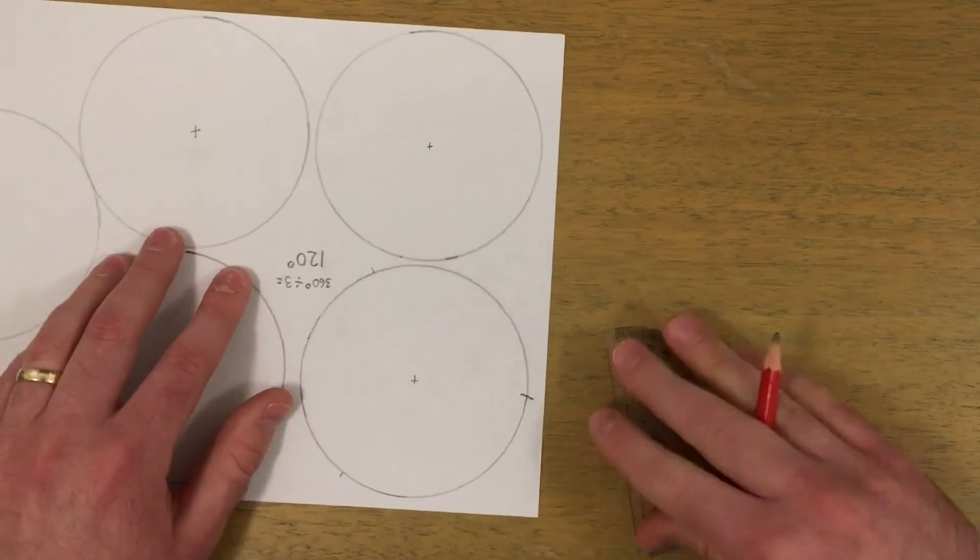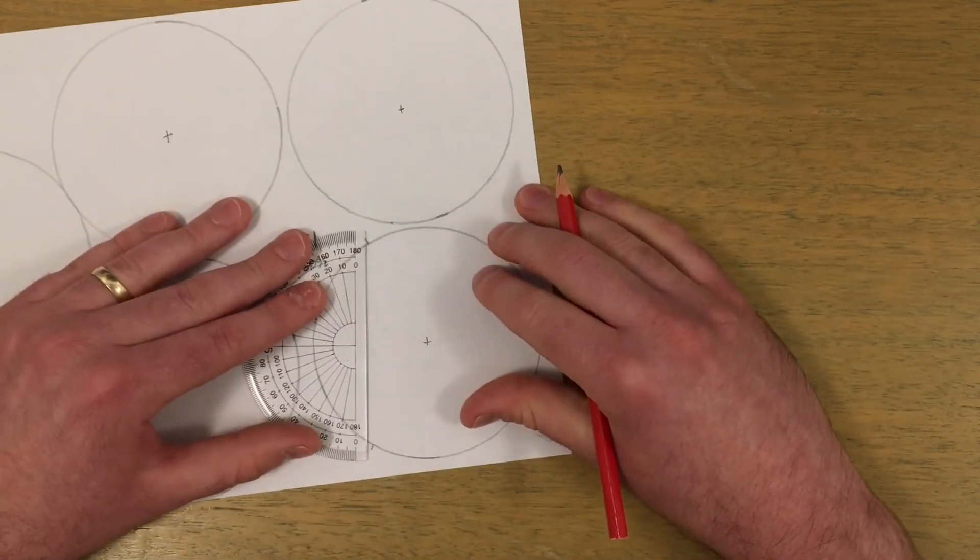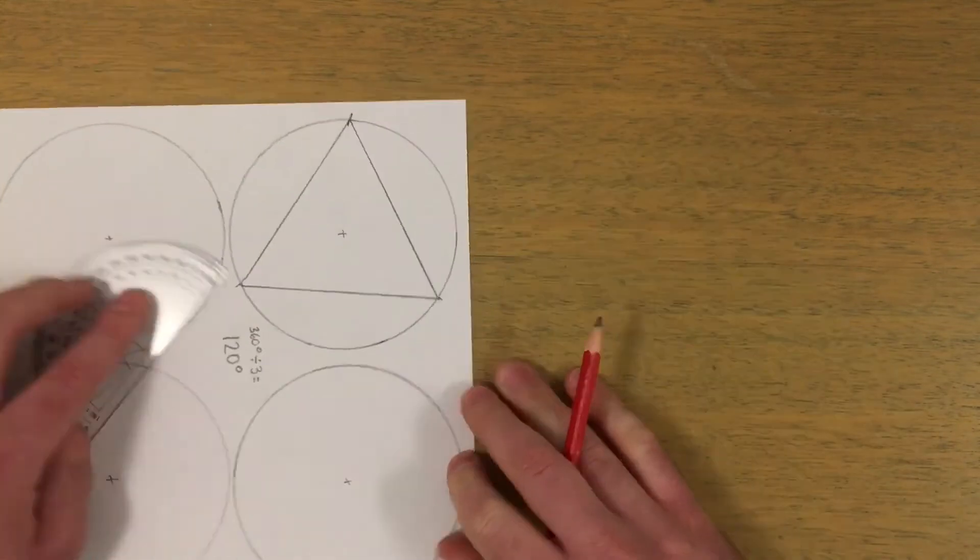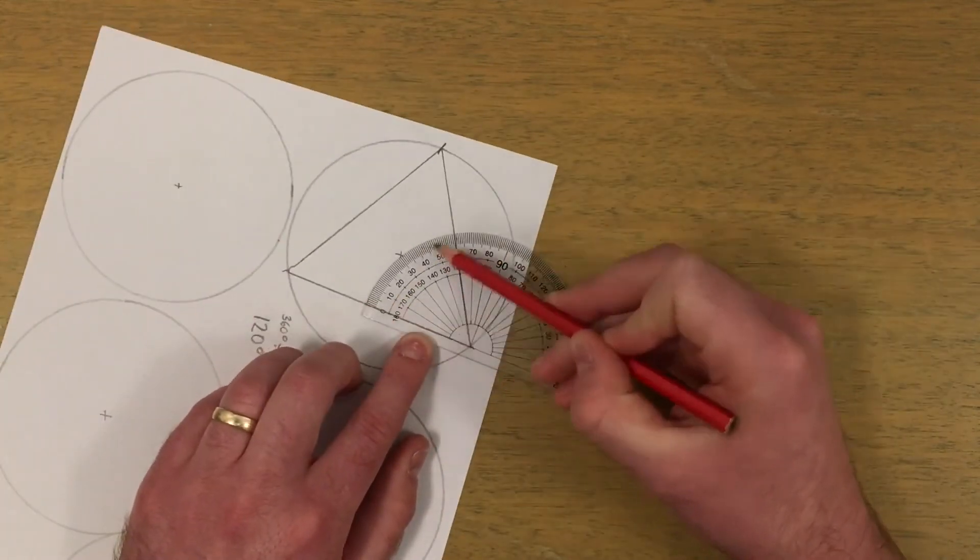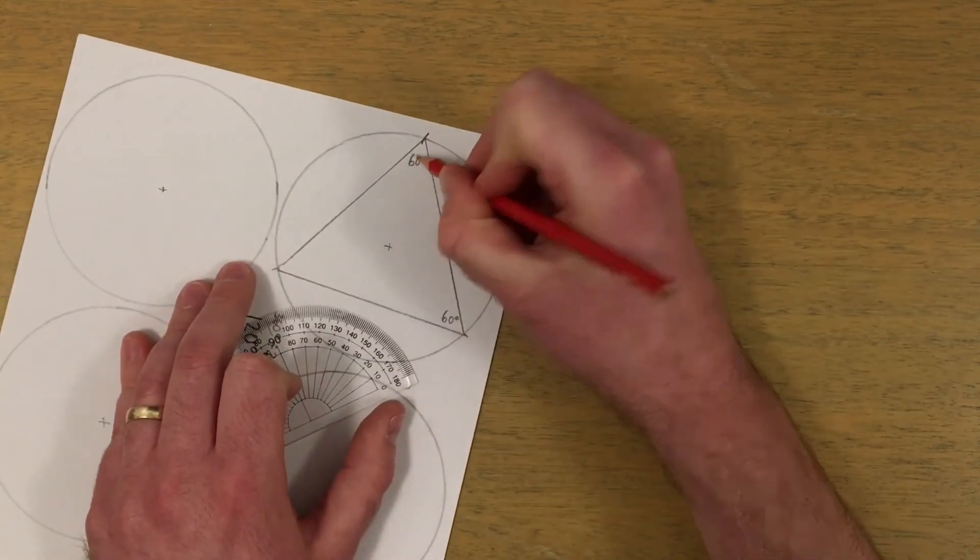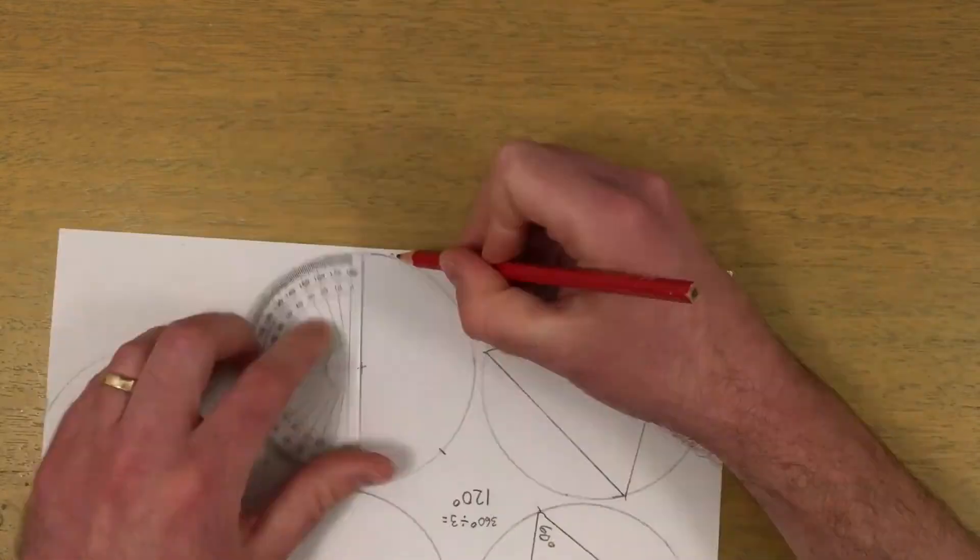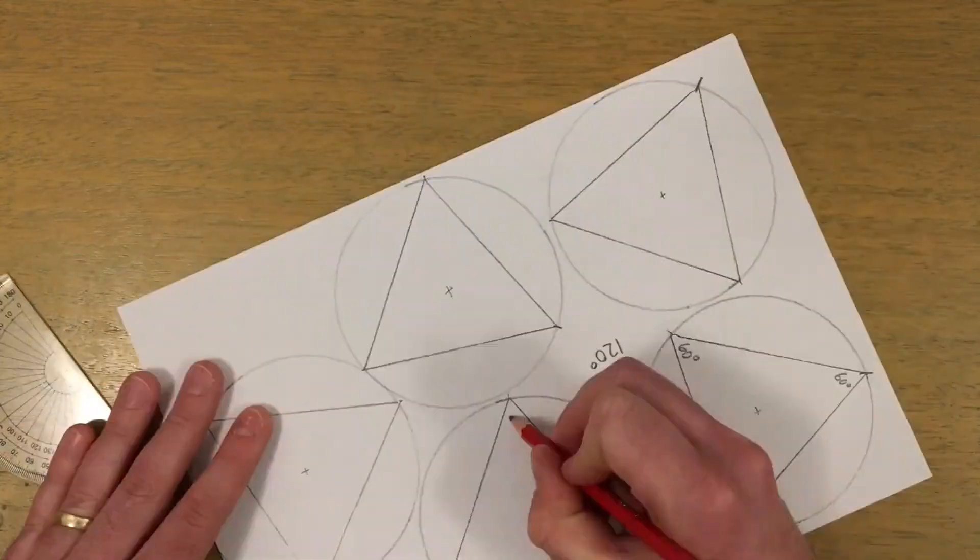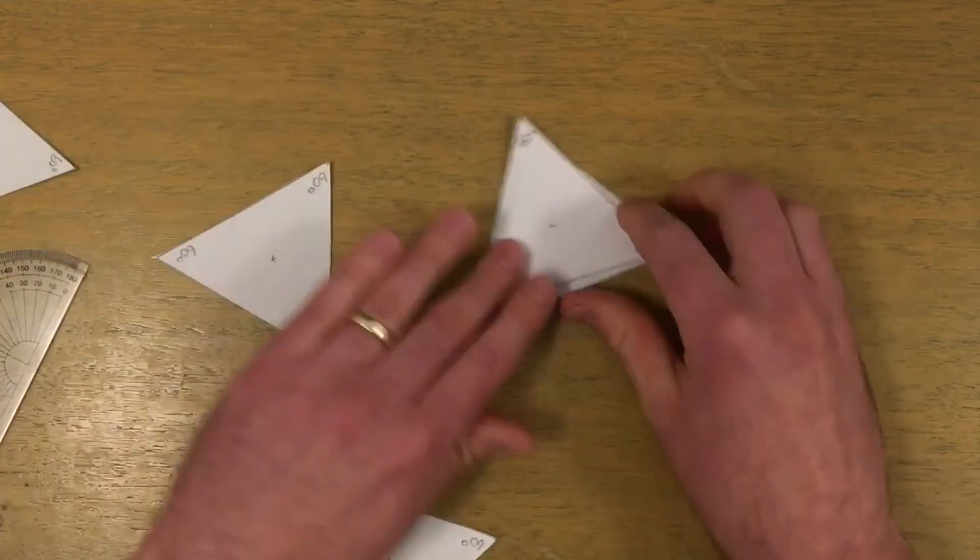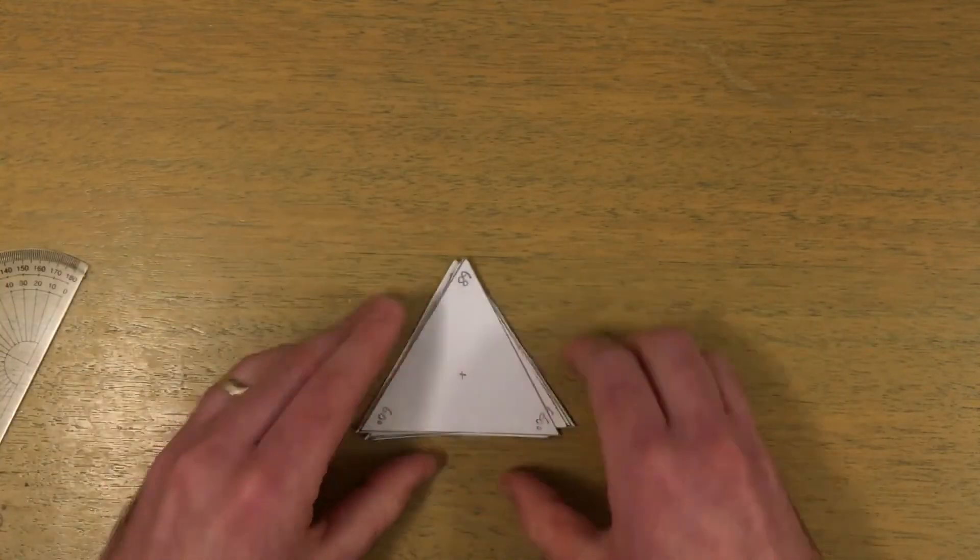Use a ruler, or the straight edge of the protractor, to join the marks and make your regular polygon. Measure and label the internal angles. Complete the other polygons and cut them out. They should be congruent, which means the same shape and size.